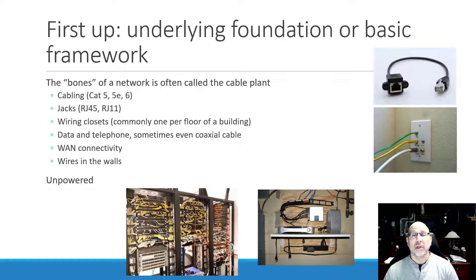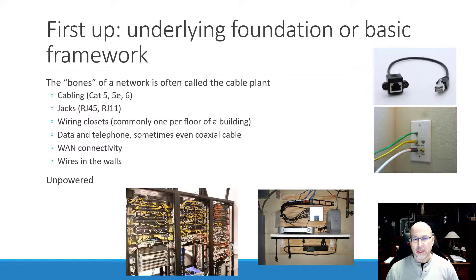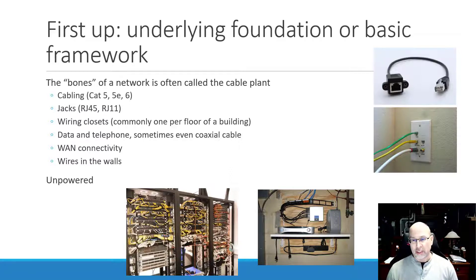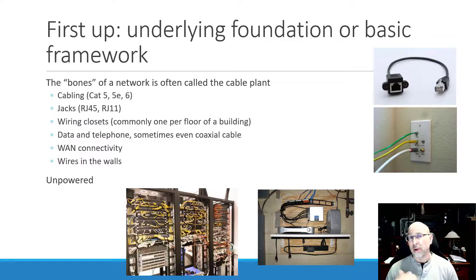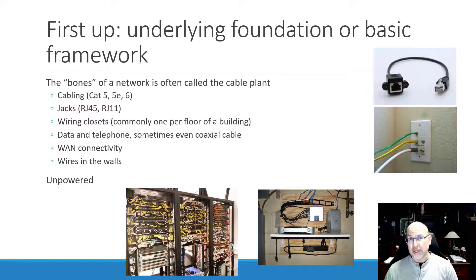All of this covers how things get from all of these end nodes back to some kind of powered connectivity. All of the things in the cable plant are often considered unpowered. In the diagrams at the bottom, you can see that a wiring closet has a lot of wires in it. They can be very complex, like the one on the left, or very simple, like one that might be in a basement or have limited connectivity for a small office or home office deployment.